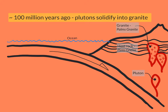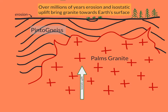The rock through which the Plutons intruded is known as the host rock, or the original rock of the continent. In the case of Joshua Tree National Park, this rock is called the Pinto Gneiss. One of the granitic bodies that intruded into the Pinto Gneiss is known as Palm's Granite.